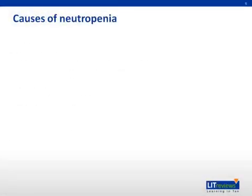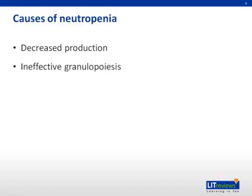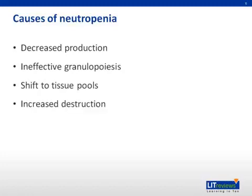Neutropenia can be caused by four broad categories of problems: decreased production of neutrophils, where your body is not making them; ineffective granulopoiesis, which is a problem in the development of neutrophils; shift to tissue pools, that is, out of the blood; and increased destruction. You can see how some of these causes, such as shifting of neutrophils to tissue pools, may not cause a functional neutropenia, while other causes, such as decreased production, can make a big difference.